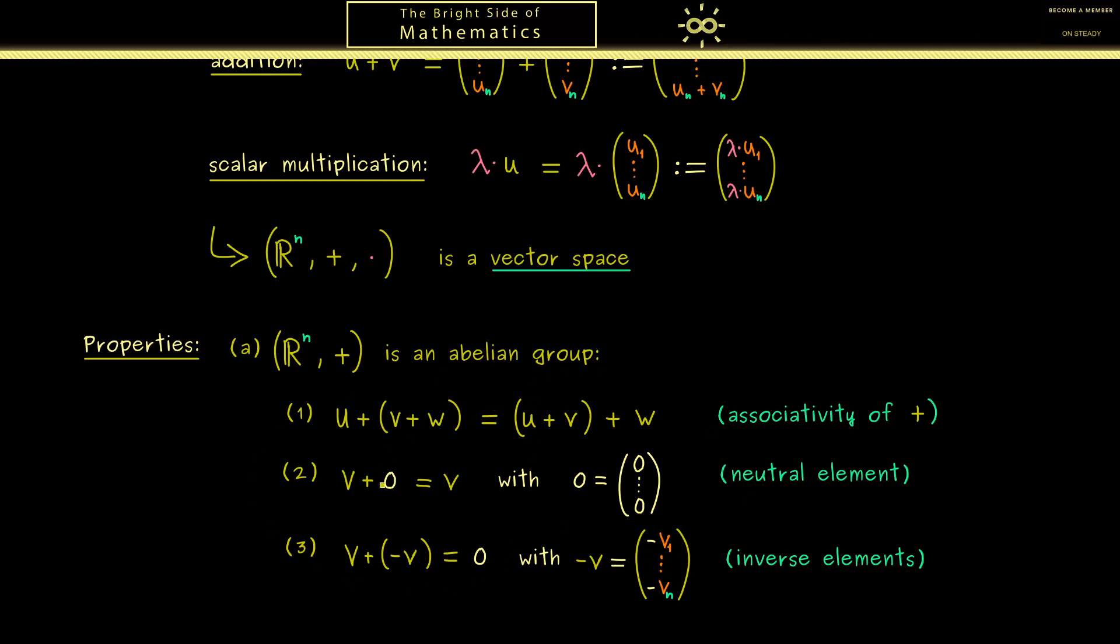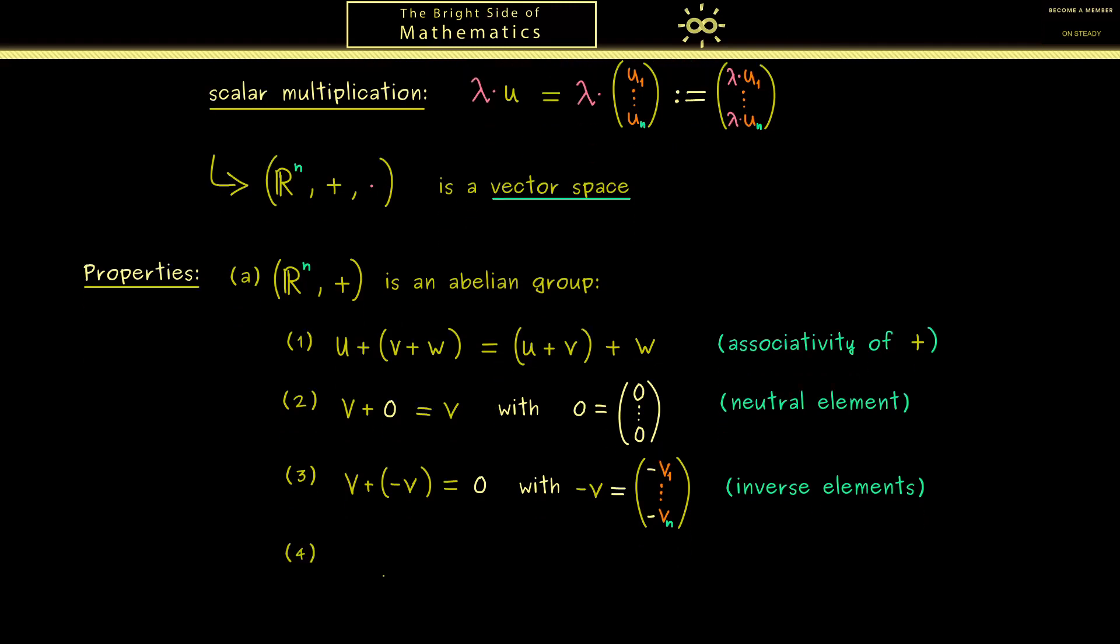However, we also want to add the term abelian, which means commutativity. Indeed, this now tells us that the order for the addition does not matter. So if v plus w is the same as w plus v, we say that the addition is commutative. And there you see we have our first part of a vector space.